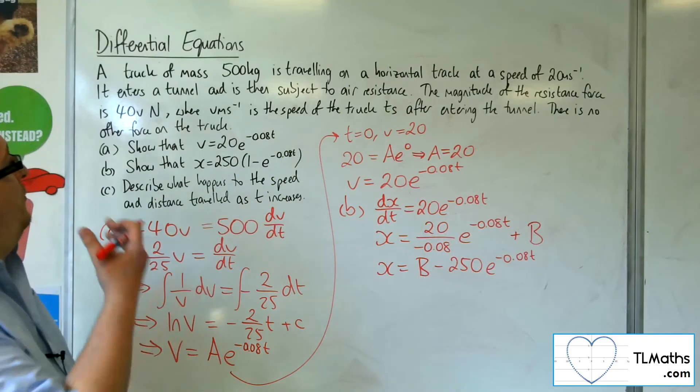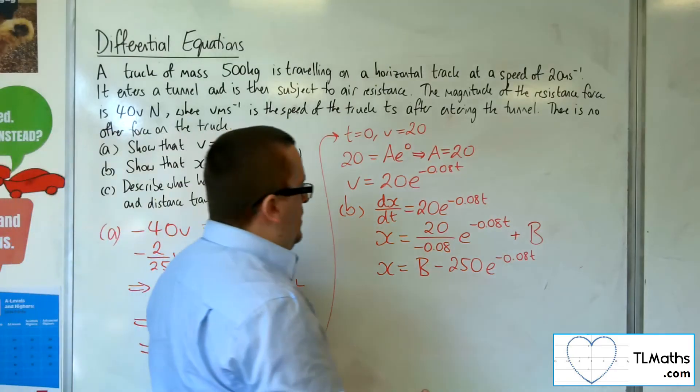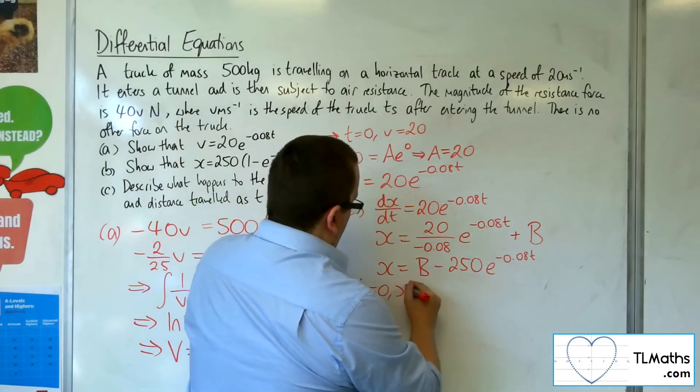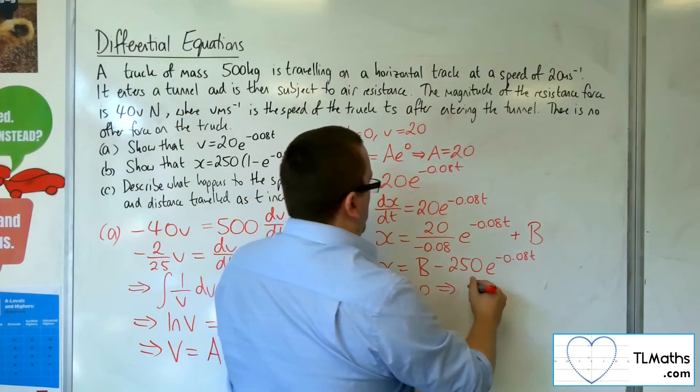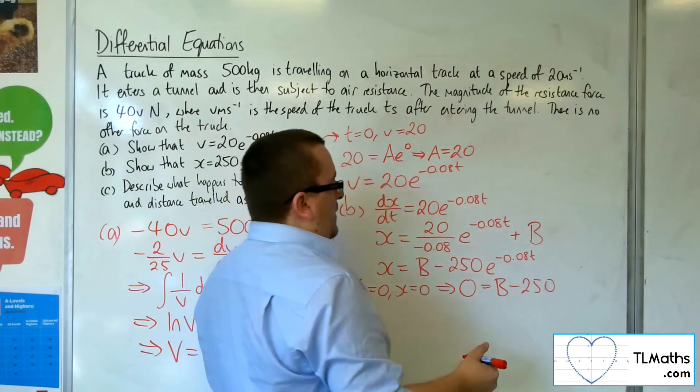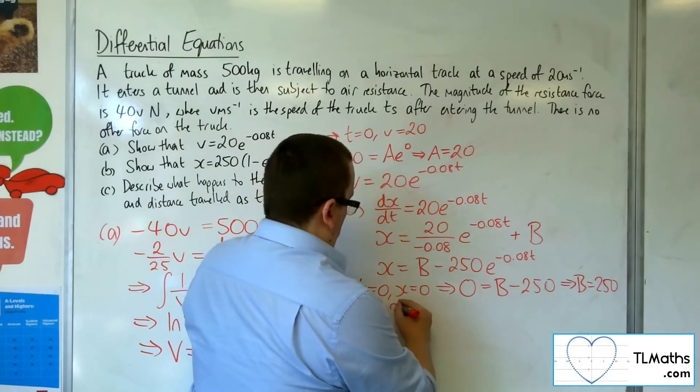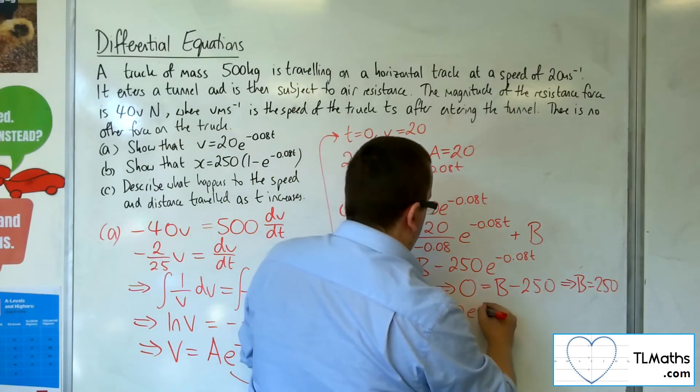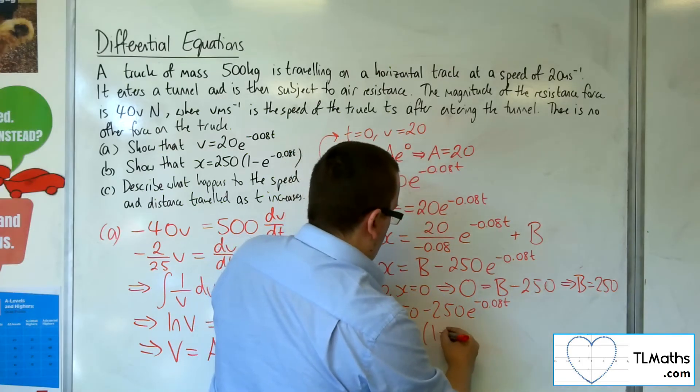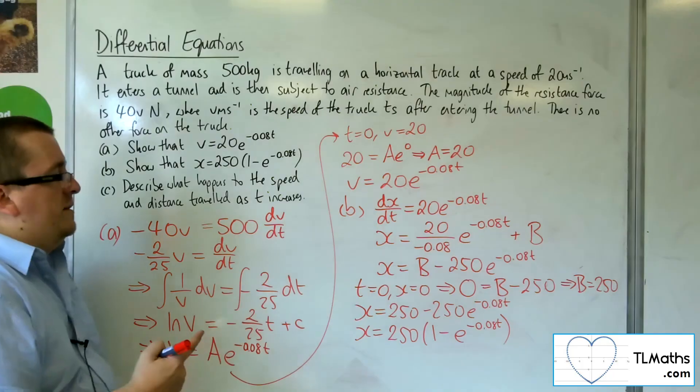So what do I know? Well, I know that the displacement initially is 0. So when T is 0, X is 0. We've got 0 equals B take away 250 e to the 0. So that means that B is 250. So X is 250 take 250 e to the minus 0.08T, and I can factor the 250 out of a bracket. And I have precisely what I was asked to find in part B.